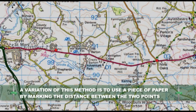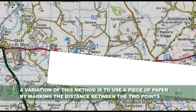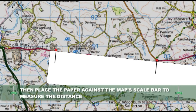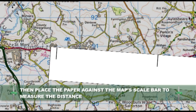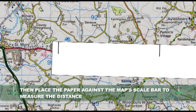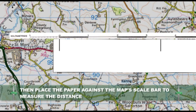A variation of this method is to use a piece of paper, marking on the paper the distance between the two points. Then the paper can be placed against the map's scale bar to measure the distance.